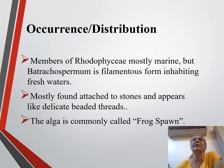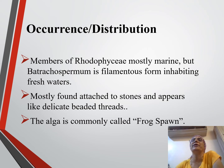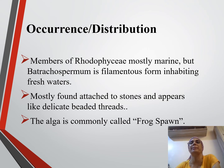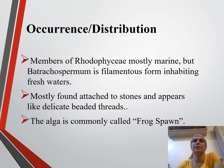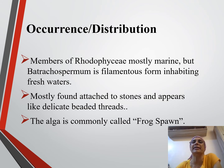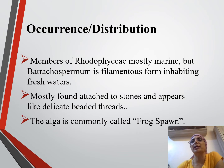Occurrence — where it can be found. Members of Rhodophyceae are mostly marine, but Batrachospermum is a filamentous form inhabiting freshwaters. It is mostly found attached to stones and appears like delicate beaded threads. The algae is commonly called frog spawn.